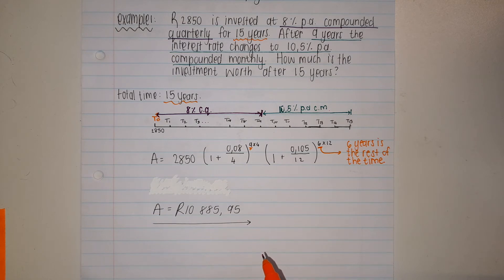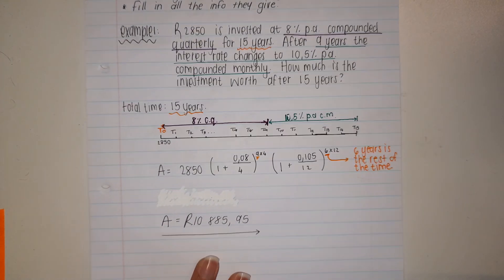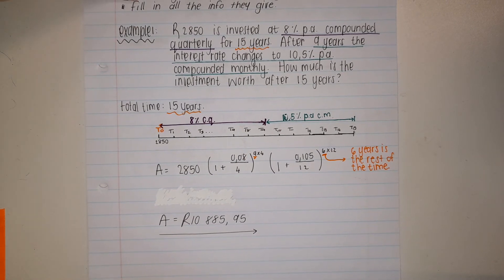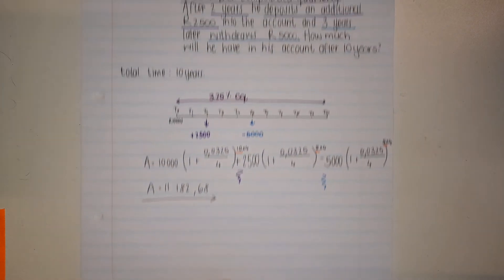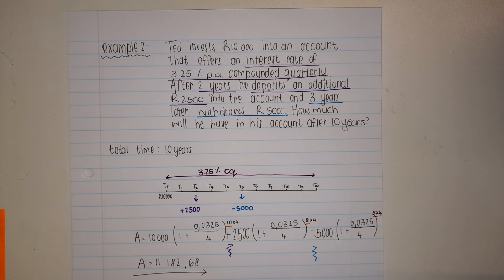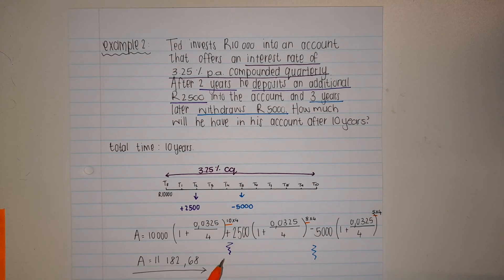This is if my interest rate changes. Now the next one they can ask you is if I add or withdraw from my bank account. Example 2: Ted invests 10,000 rand into an account that offers an interest rate of 3.25% per annum compounded quarterly.